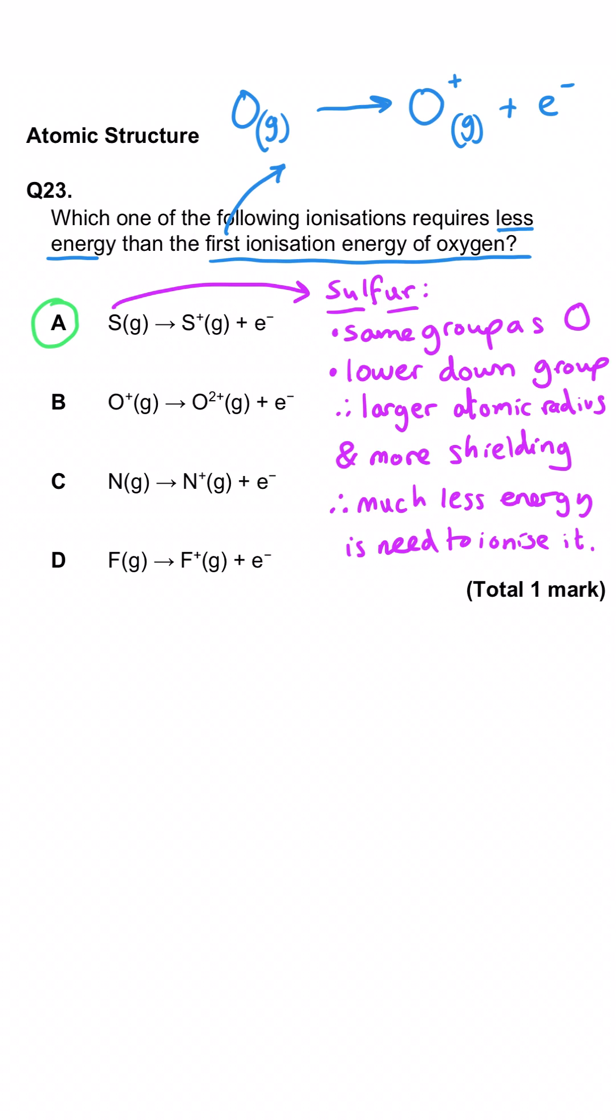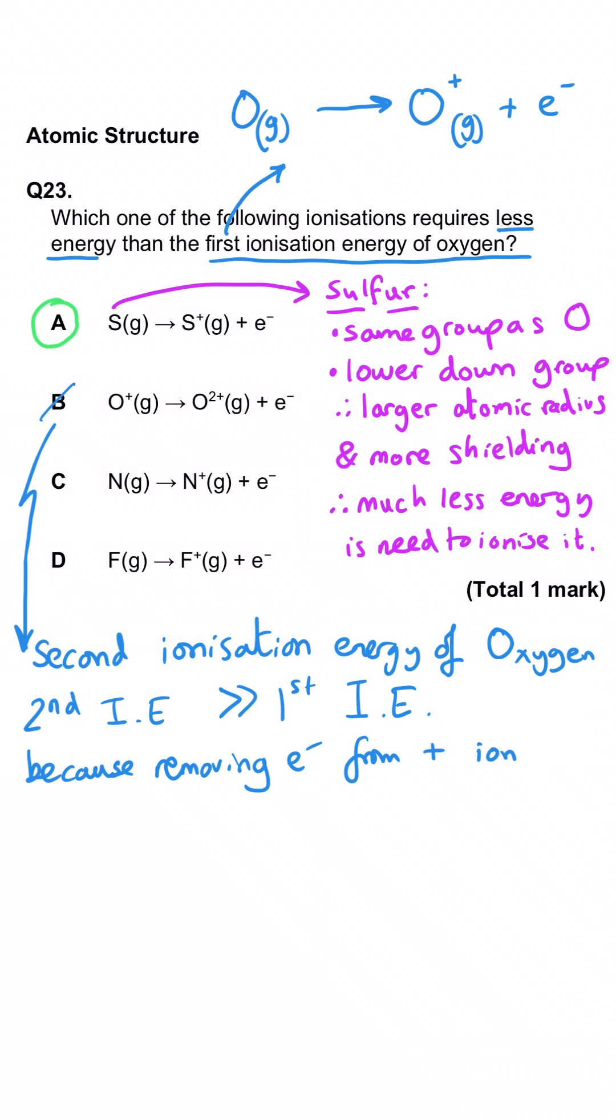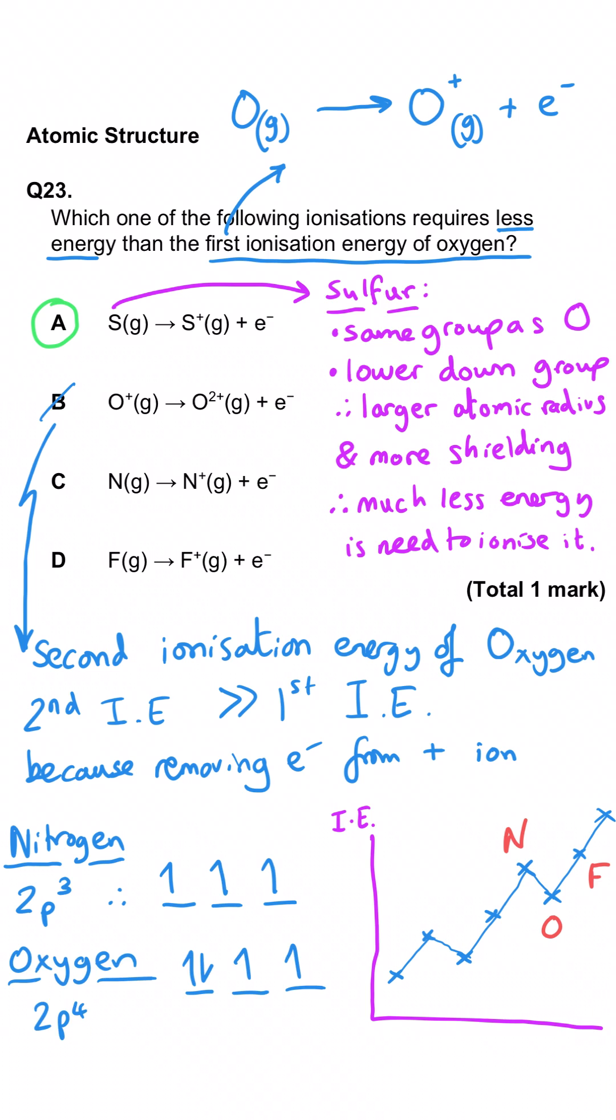We'd move on here in a test but let's just explore the others. B is the second ionization energy of oxygen. Second ionization energies are always higher than first. Nitrogen's outer electrons are in the 2p subshell and it is 2p3 whereas oxygen is 2p4 and it has got a pair of electrons in one of the orbitals and those electrons are easier to remove. Fluorine has got a smaller atomic radius than oxygen and a larger nuclear charge so its ionization energy will be larger as a result of this.